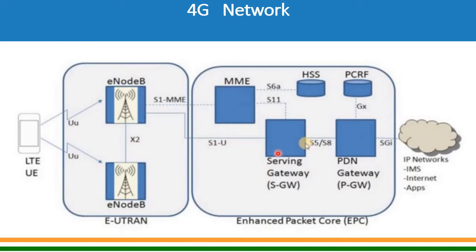On the user plane side, data traffic flows from UE to E Node B to Serving Gateway to PDN Gateway to the IP network or any other network like IMS, internet, or any apps. The upper part is the pure control plane, whereas the lower part is primarily user plane but also does some control plane functions.